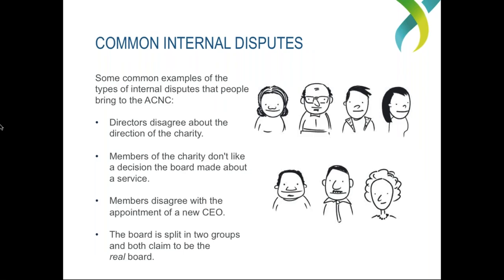We hear from many people involved in charities about internal disputes. We've put together some common features of internal disputes that we see here at the ACNC. Some examples are where directors disagree about the direction of the charity, where members don't like a decision the board made about a service or activity, members disagreeing with the appointment of a CEO, and probably the biggest one — the board is split into two groups and both claim to be the real board. These are common things that are reported to the ACNC, and if you're involved in a charity, these might look familiar.